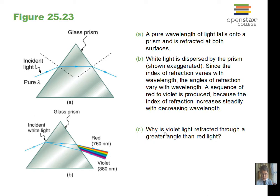Can you answer this question: why is violet light refracted through a greater angle than red light? You should write down Snell's law and realize that the violet index of refraction is greater than the red index of refraction — violet light slows down more than red light, giving us refraction at different angles.